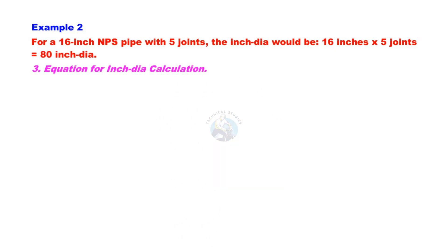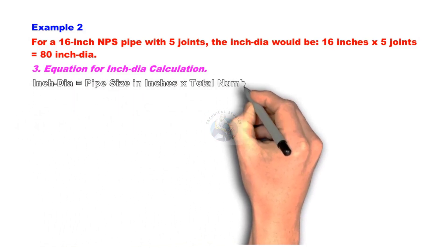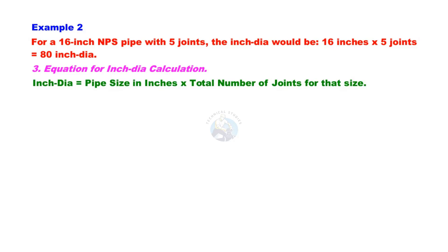The equation for inch-dia calculation is: inch-dia equals pipe size in inches multiplied by total number of joints for that size.